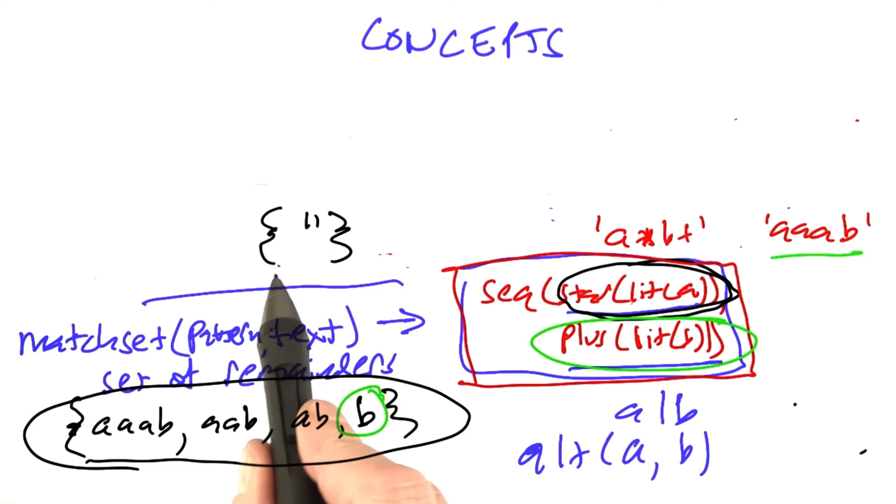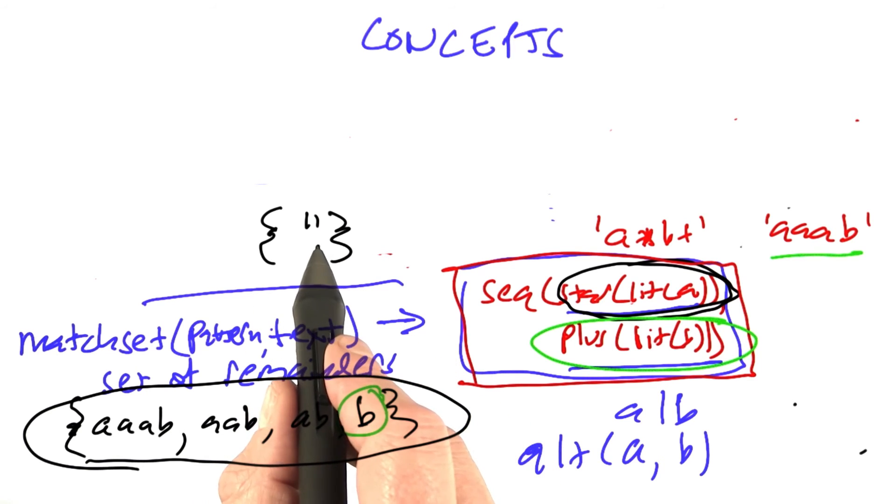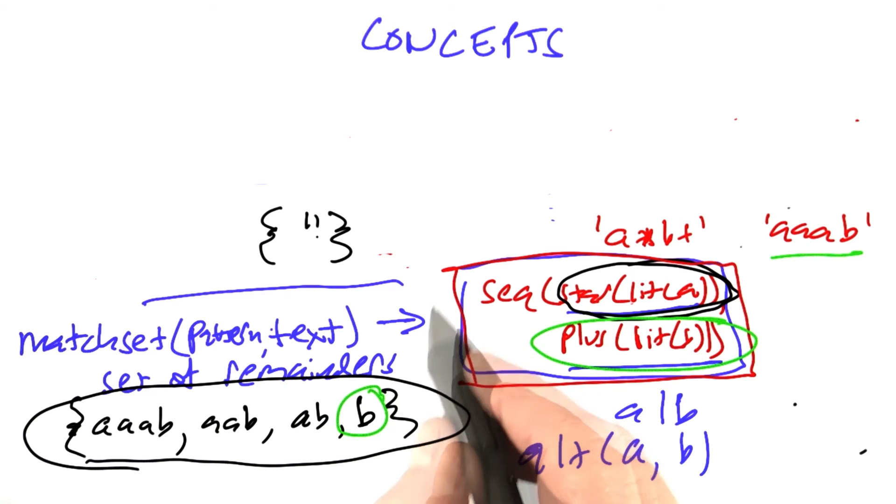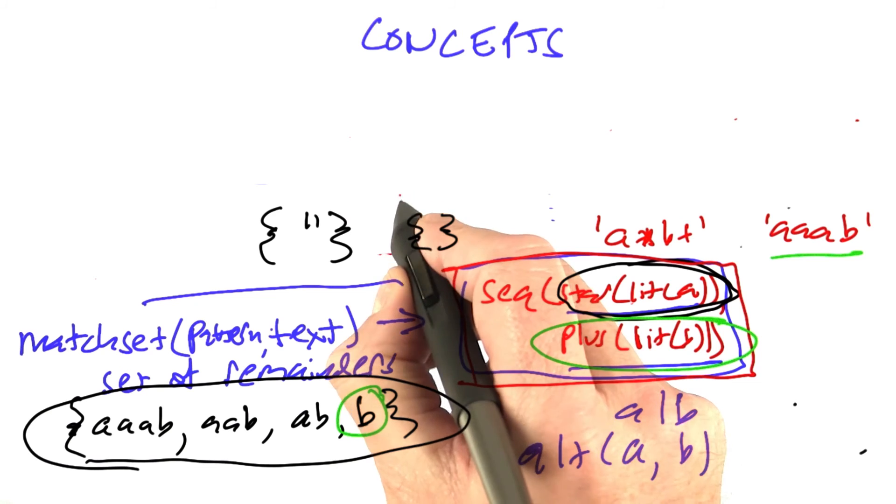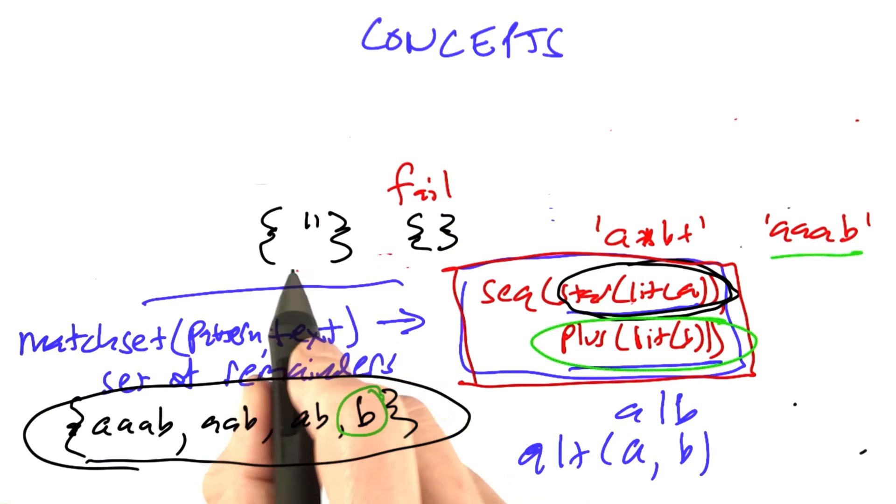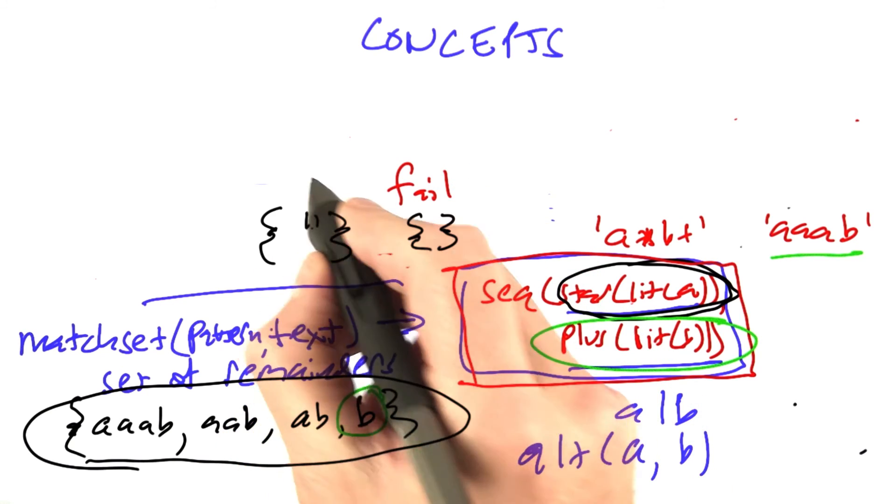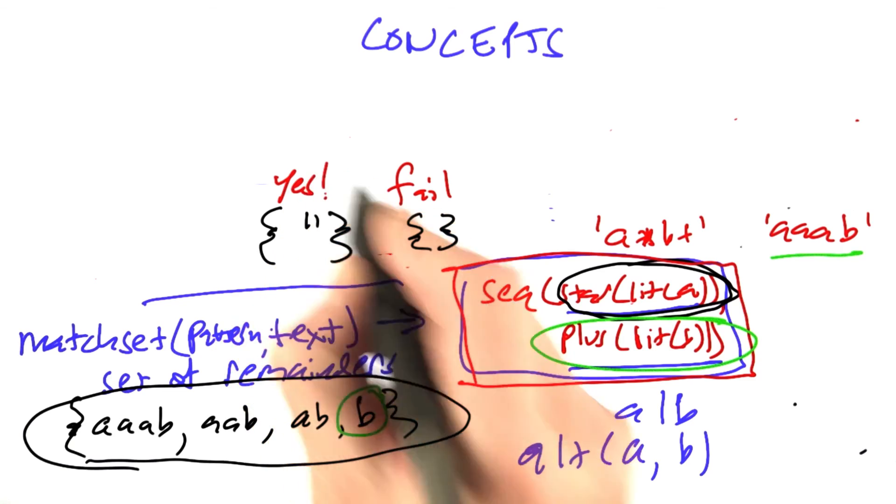Note that there's a big difference between the outcome of saying, here's a result consisting of one string, the empty string, versus a set that's the empty set. The empty set is a failed match, and the set consisting of the empty string, that's a successful match.